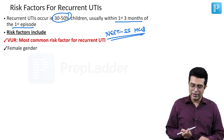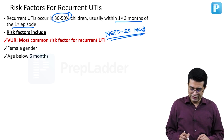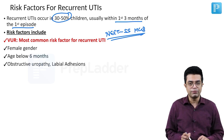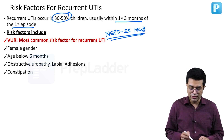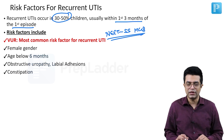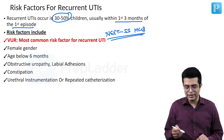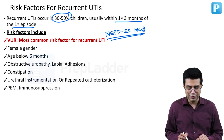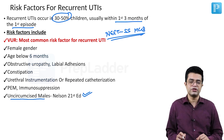Females are a risk factor for UTI, so recurrent UTIs are more common in females. They are common in age below 6 months. Obstructive uropathy or anatomical disorders like labial adhesions in males also contribute. Constipation contributes to recurrent UTI by producing bowel dysfunction. Urethral instrumentation or repeated catheterization increases the risk of recurrent UTI.